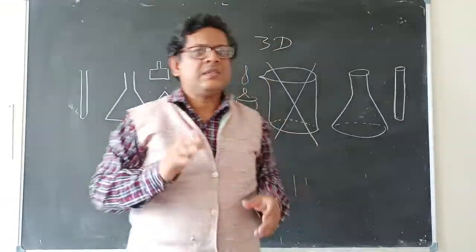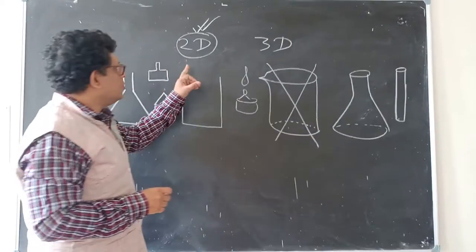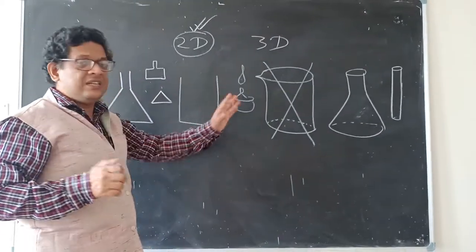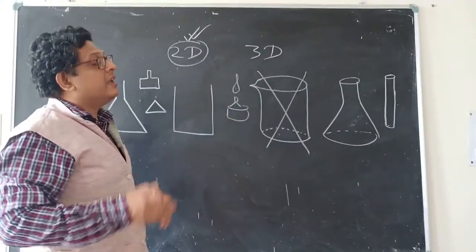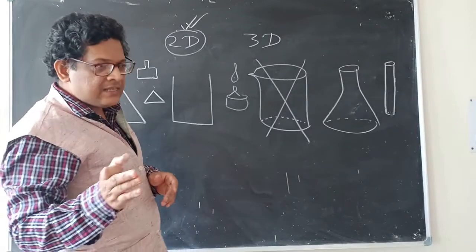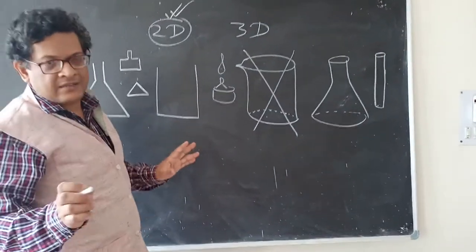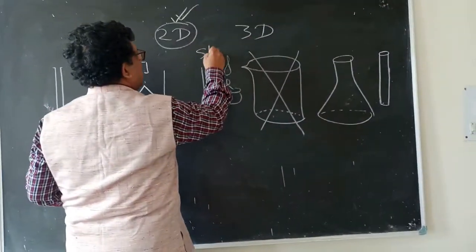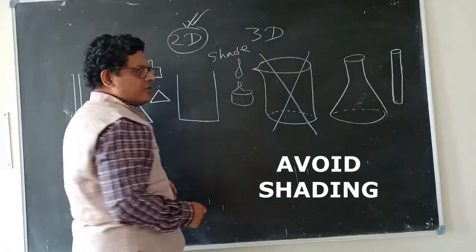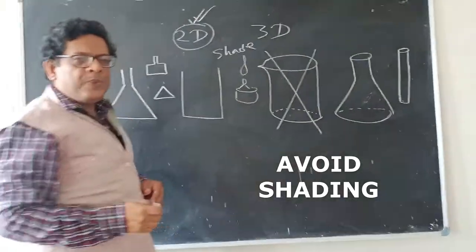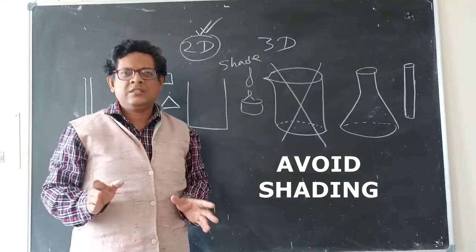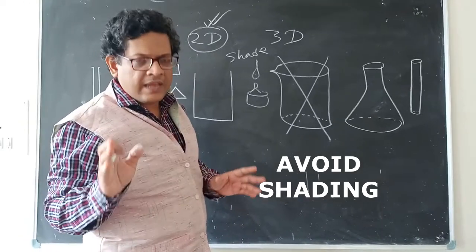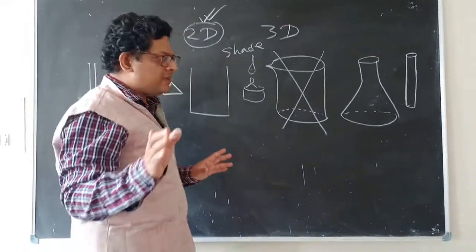So today's lesson is: always try to draw a 2D diagram, not a 3D diagram. Another lesson — avoid shading. Many of you apply shading, so please avoid it, especially in biological diagrams. Avoid shading.